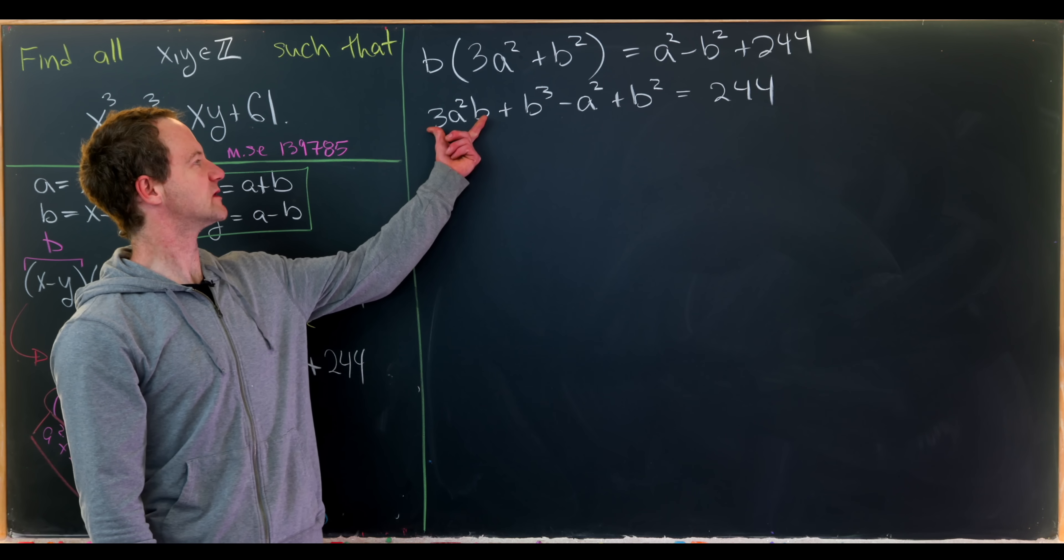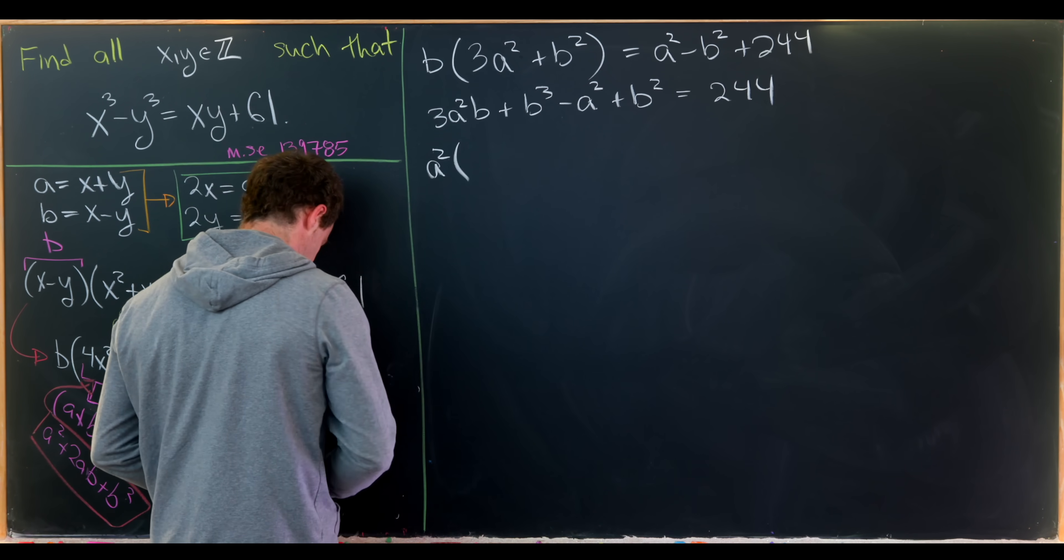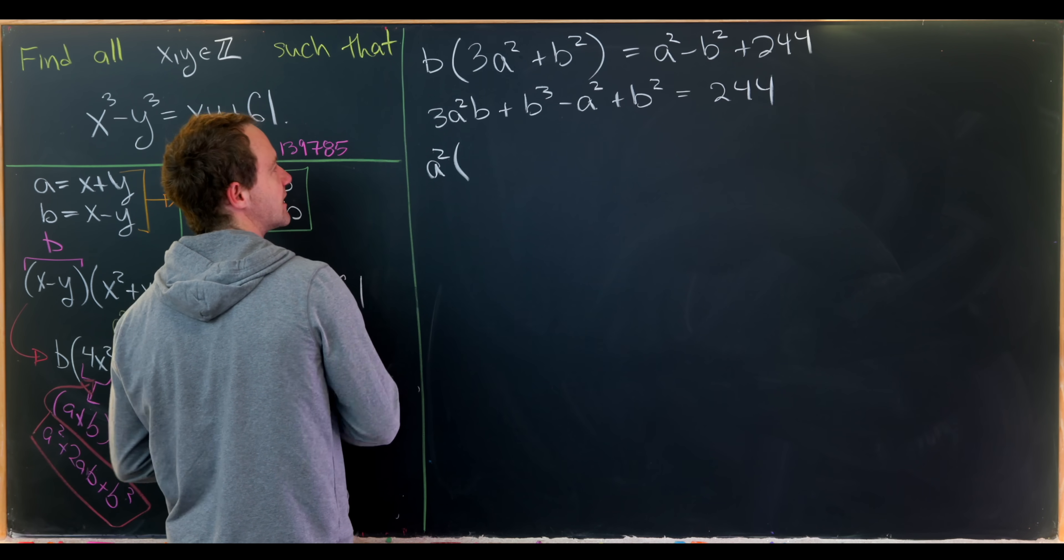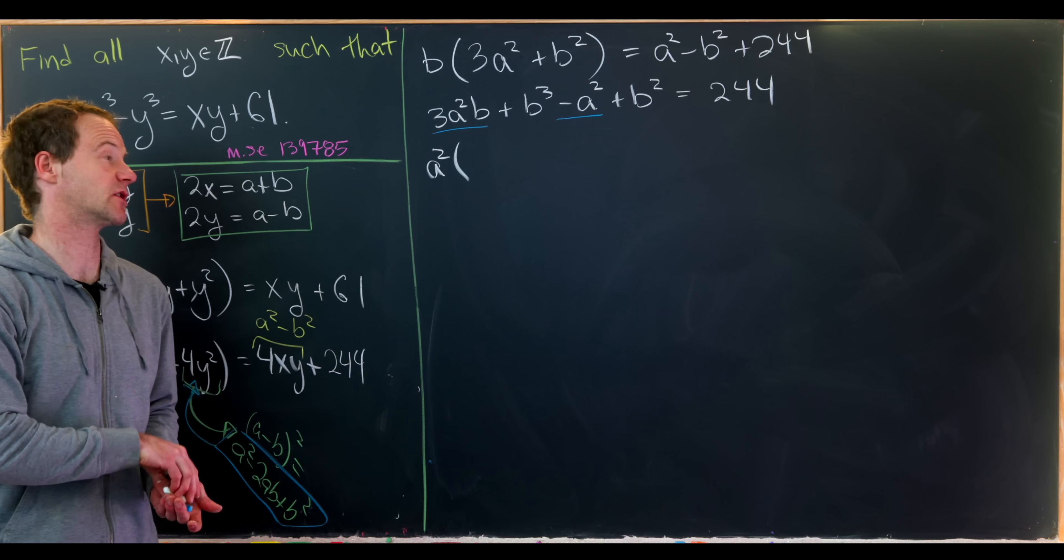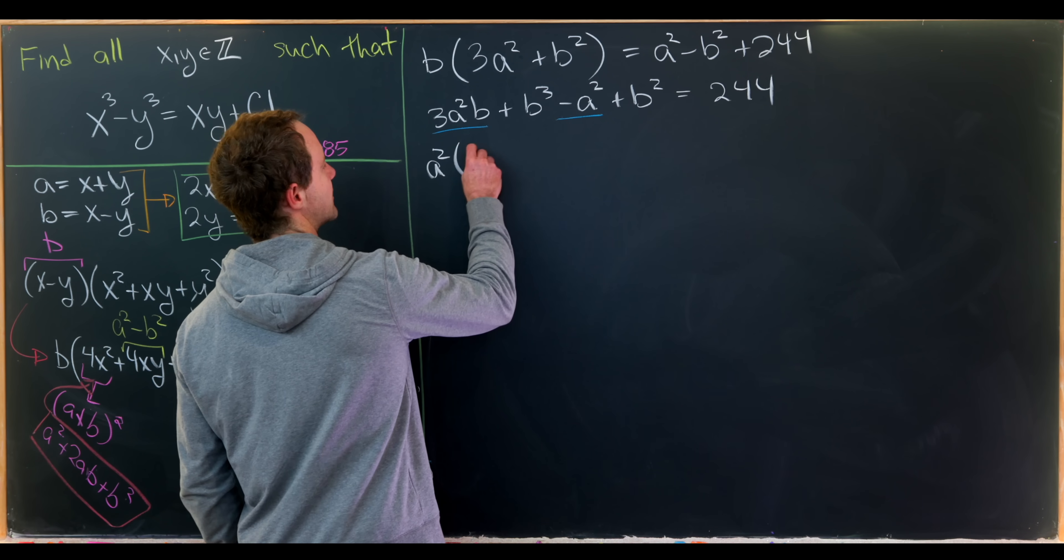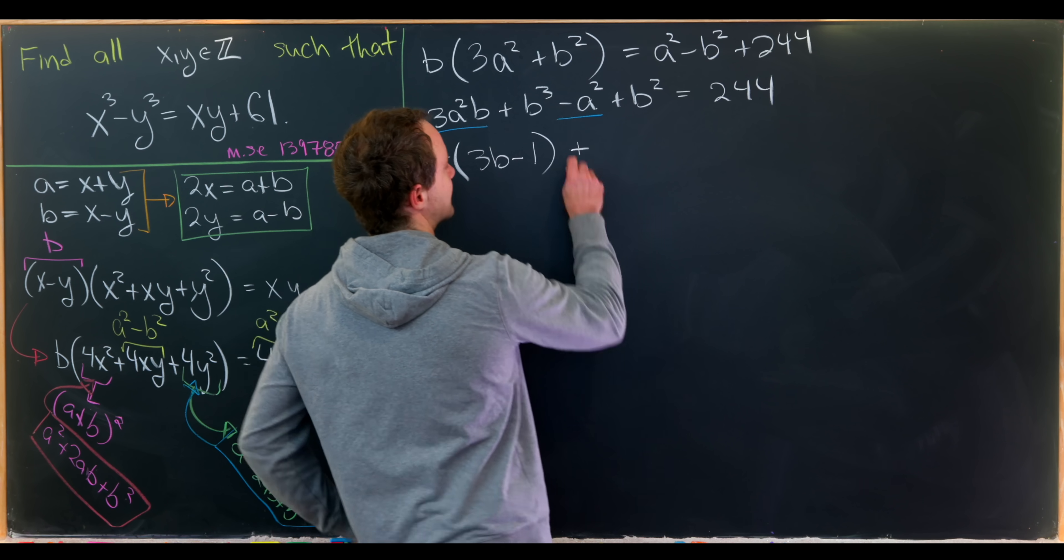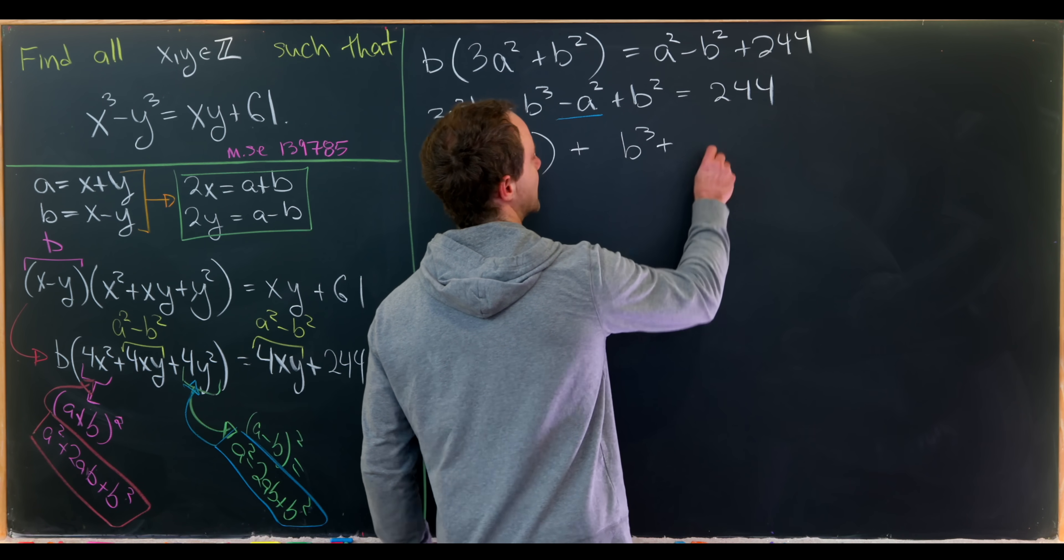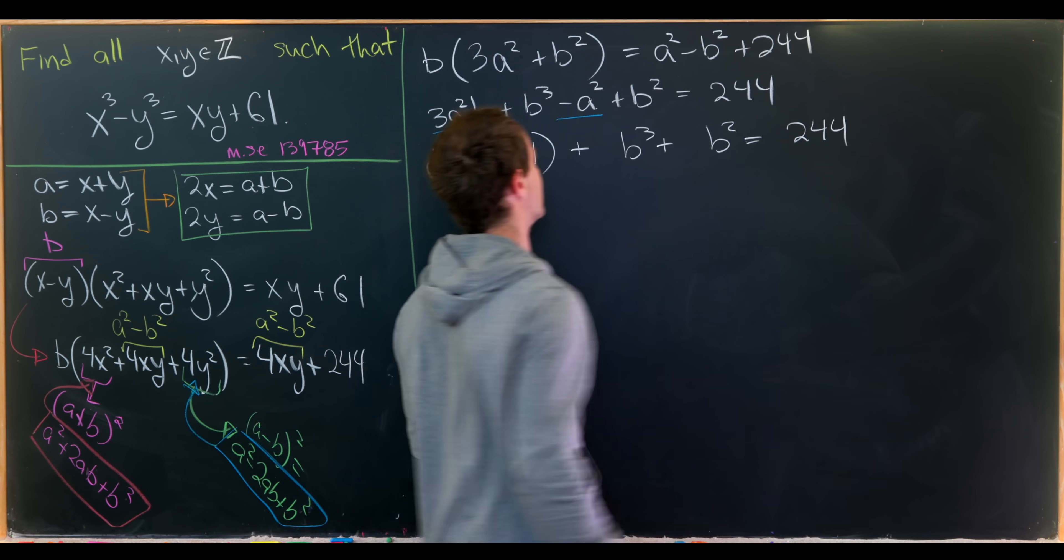Now we can move some things around. Maybe distribute this b through and then move the a squared and the minus b squared over. That'll leave us with 3a squared b plus b cubed minus a squared plus b squared equals 244. From here maybe we'll take an a squared out of these two terms, leaving us with a squared times 3b minus 1, and then left over we have b cubed plus b squared equals 244.